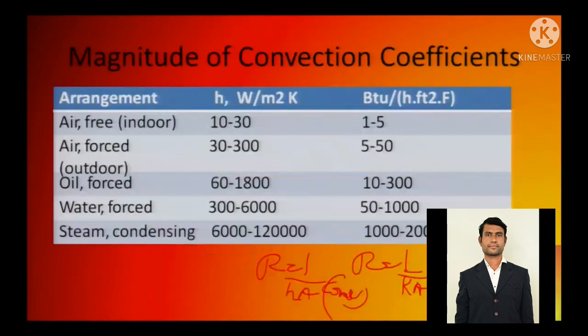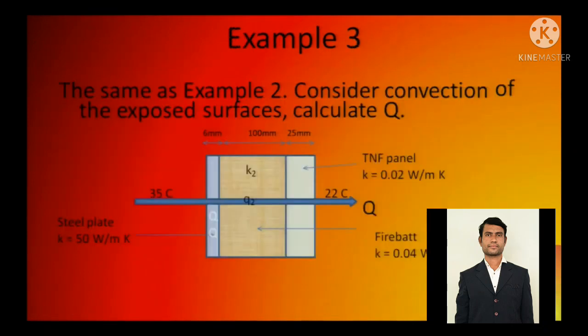The same thing you can do here. As per the previous slide, we know that free indoor has h this, forced outdoor has h this. We have k1, k2, k3, likewise the previous slide. We have x1, x2, x3. Now we have h1 here and h2 here - this is indoors and that is outdoors. So what will you be doing? L1 by k1 A, all they are in series, L2 by k2 A, L3 by k3 A plus 1 by h1 A plus 1 by h2 A. So this will be R. So q is delta T by summation of R. This is how you will solve the numerical.